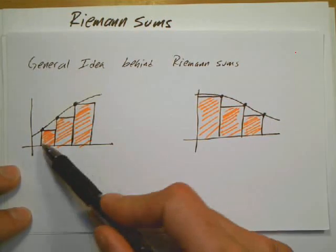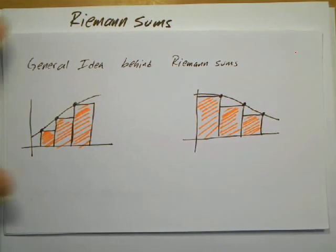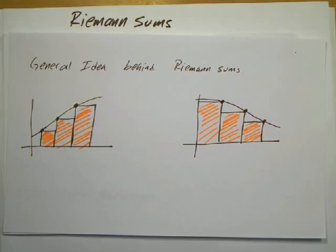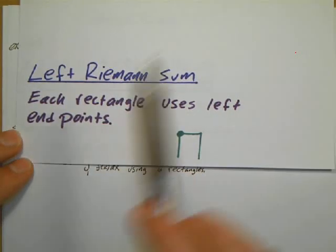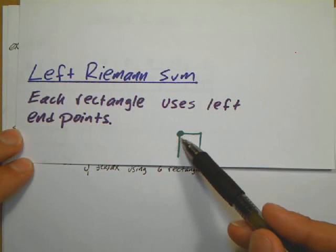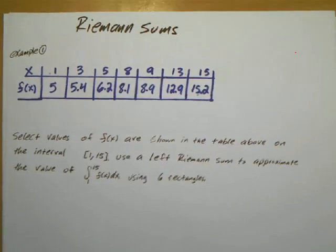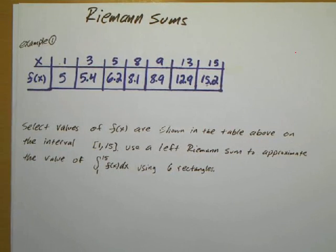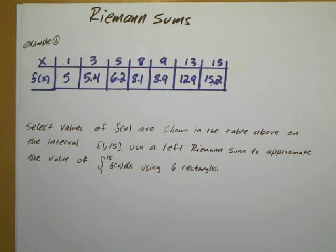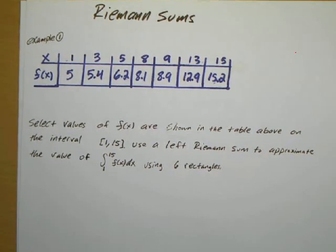The general idea is that you want to put rectangles that approximate the exact area under the curve. The first type is the left Riemann's Sum, where each rectangle touches or uses a left endpoint. All these examples deal with a table of values, so we don't know what the exact function is. We're just given some assortment of values and we're going to approximate the integral using a Riemann's Sum.